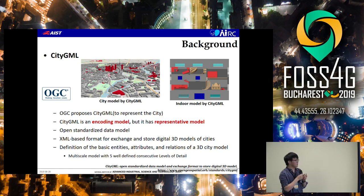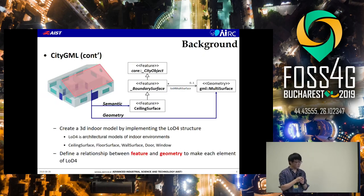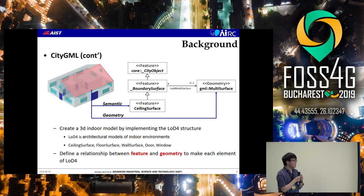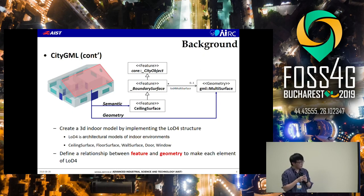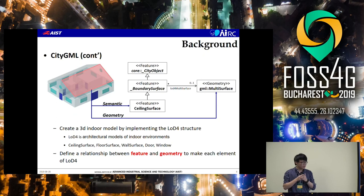The building module is a multi-scale model with five well-defined consecutive levels of detail. We are creating our 3D indoor model by implementing the Level of Detail 4 structure. Level of Detail 4 represents architectural models of indoor environments. We defined the relationship between feature and geometry to make each element of LoD4. So now we know that point cloud has geometry information, and we can create a 3D model by defining the relationship between feature and geometry.